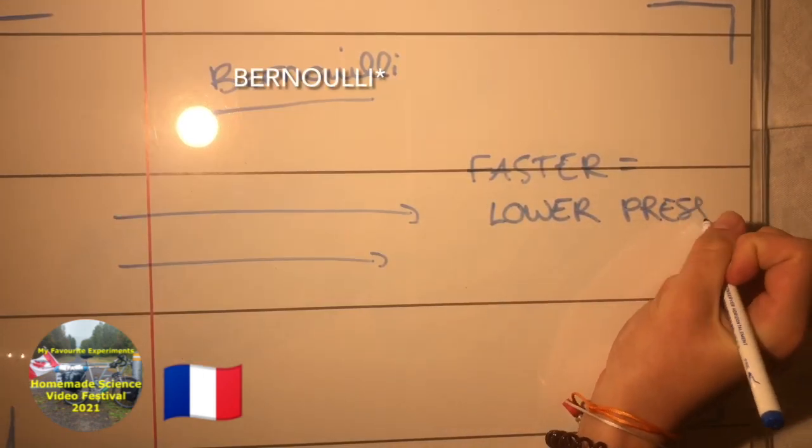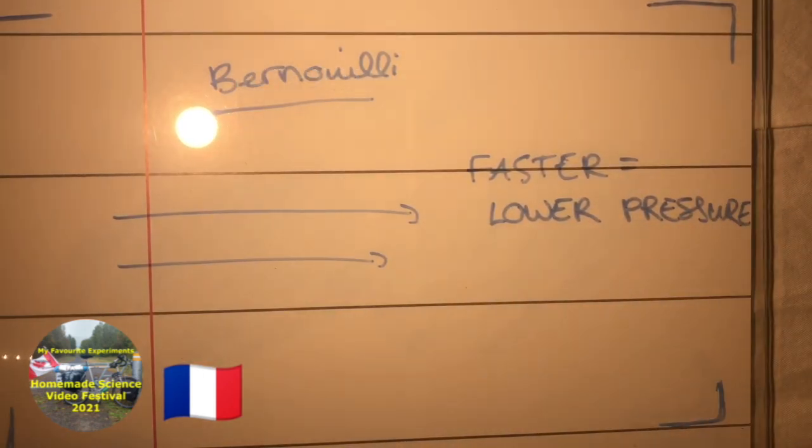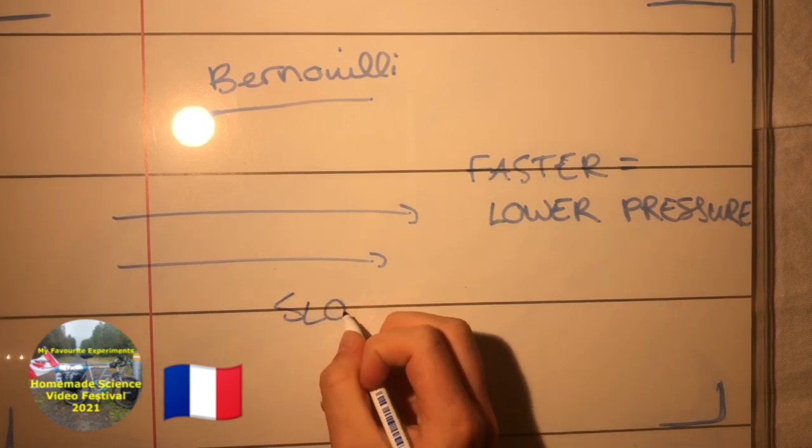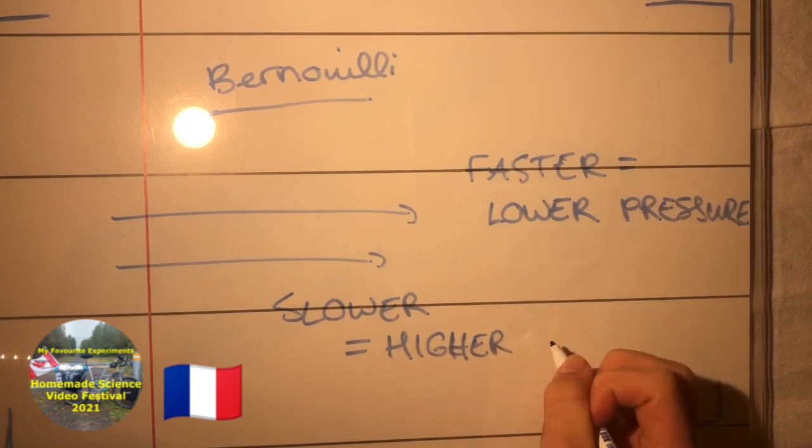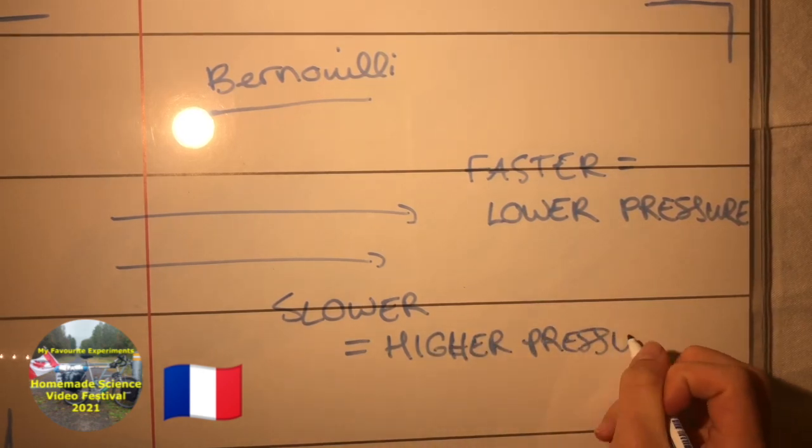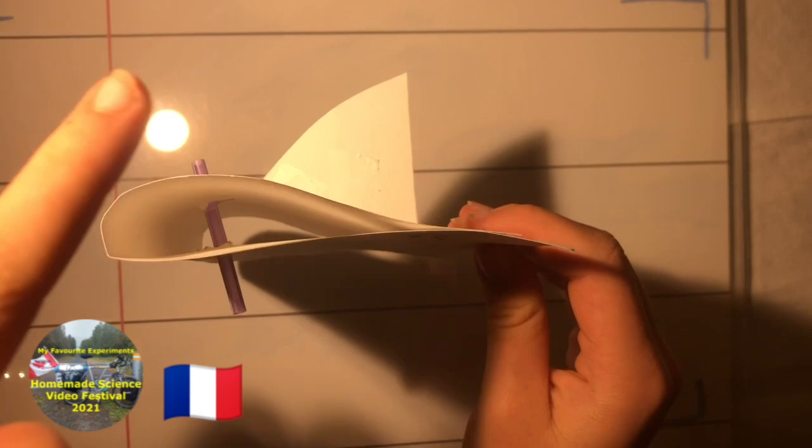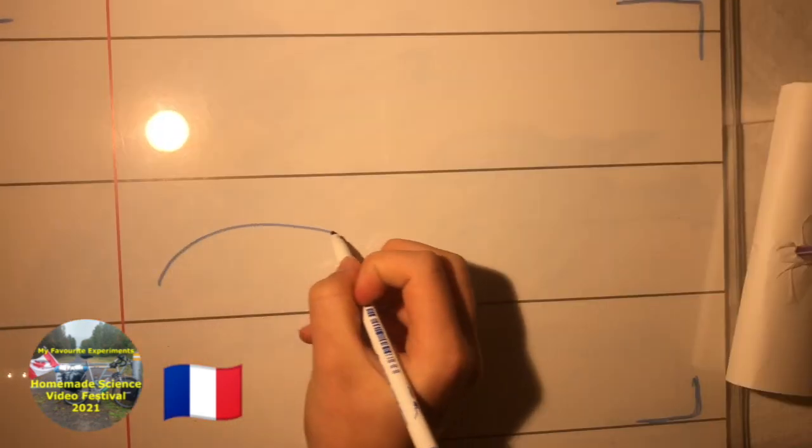According to the 18th century physicist Bernoulli, when a fluid increases in velocity, it will decrease in pressure. And opposingly, when a fluid decreases in velocity, it will increase in pressure. So, imagine this wing is attached to a plane that's accelerating on the runway.